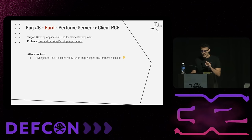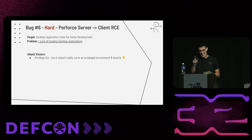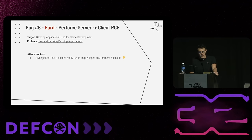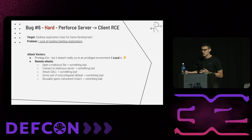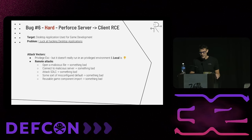Bug number six is going to be a long one: a Perforce server-to-client RCE. The target was a desktop application used for game development. I suck at hacking desktop applications — I didn't include that in the intro. Local attacks are kind of dumb anyway, so let me focus on remote attacks. Some ideas: open a malicious file and something bad happens; connect to a malicious server with the development environment; attack the software development lifecycle to inject into the build; take advantage of misconfiguration like unclaimed domains or S3 buckets; or take reusable game component pieces being processed and do something with those.